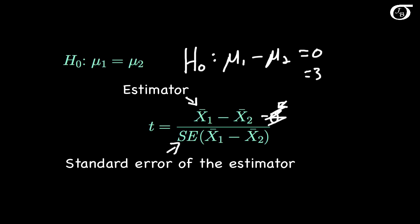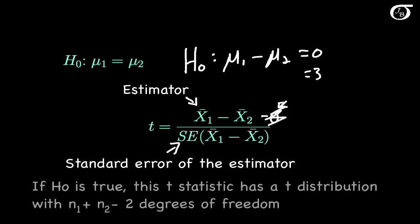If the null hypothesis is true, this test statistic will have a t-distribution with n1 plus n2 minus 2 degrees of freedom. Using the p-value approach, after calculating the test statistic we need to find the p-value.